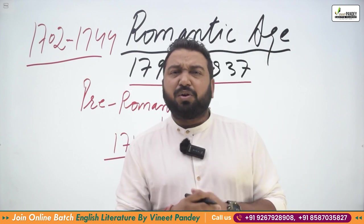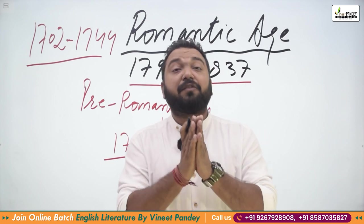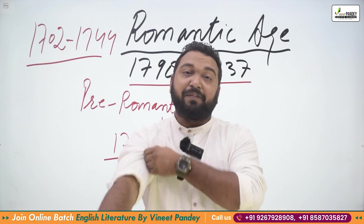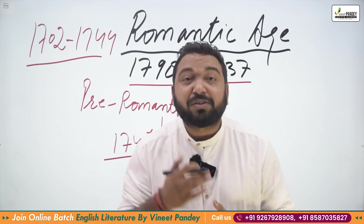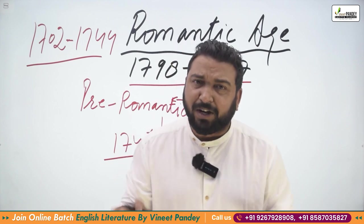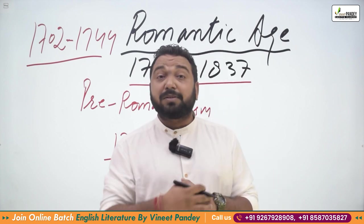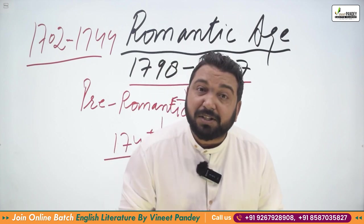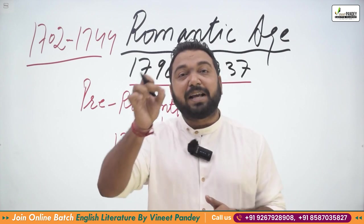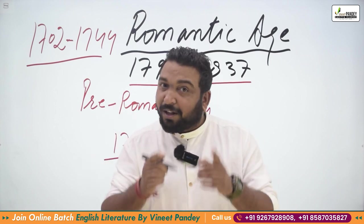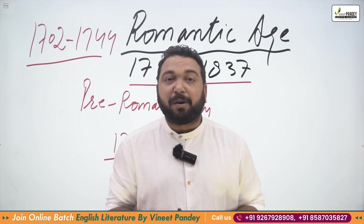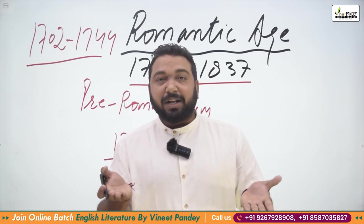Pre-Romantics were writers who tried to find a connection with nature. Alan Ramsay wrote The Gentle Shepherd in 1725. Samuel Johnson experimented in blank verse and wrote a tragedy, Irene, in 1749. James Thomson started writing in 1726 and ended in 1730, writing The Seasons — Winter, Summer, Spring, and Autumn.